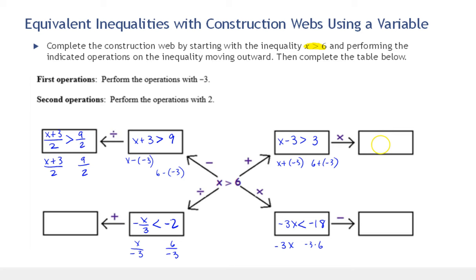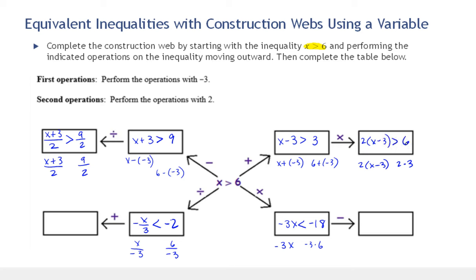Moving to this side, we want to multiply by 2. So on the left we have 2 times x minus 3, and on the right we have 2 times 3. We don't have to change the direction. We could distribute but we're not going to — we're not solving yet and this is a good structure. So greater than 2 times 3 is 6.